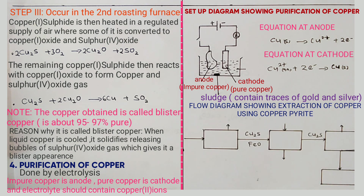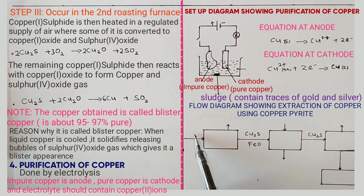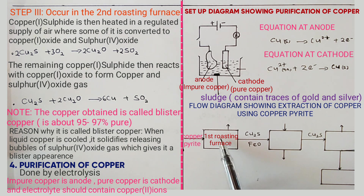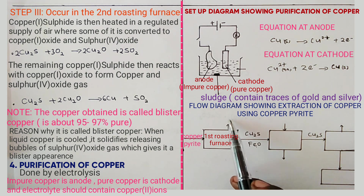In the flow chart, the first stage is crushing of the ore, followed by concentration of the ore to remove impurities. The concentrated pure ore then enters reduction stage one, occurring in the first roasting furnace, where copper pyrites is heated in air to form copper one sulfide, iron two oxide, and sulfur four oxide, which exits as gas.